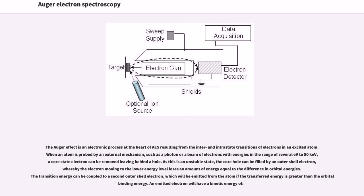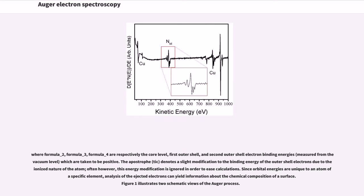The transition energy can be coupled to a second outer shell electron, which will be emitted from the atom if the transferred energy is greater than the orbital binding energy. An emitted electron will have a kinetic energy of, where E_2, E_3, E_4 are respectively the core level, first outer shell, and second outer shell electron binding energies.